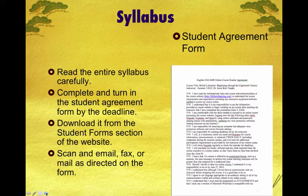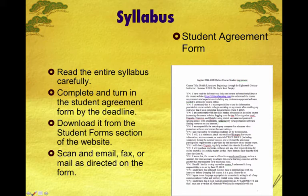I will email everyone a syllabus on the first day of class, August 26th. You will need to complete, sign, and return the student agreement form using the directions on it. Please get it to me before the certification day, September 9th. You are not going to be enrolled in this course officially until you do two things: email me that you have seen this orientation, and return the student agreement form. Certification affects your financial aid, so be sure to complete both of these requirements.